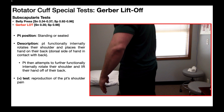We're now going to talk about the Gerber liftoff test, sometimes just called the liftoff test. This is one of two commonly used special tests to assess whether somebody has a tear in their subscapularis muscle. To perform this test, the patient will either be standing or seated. The patient functionally internally rotates their shoulder, placing their hand on their back with the dorsal side of the hand in contact with the back, not the palm. The patient then attempts to further functionally internally rotate their shoulder and lift the hand off of their back — that's the liftoff component.